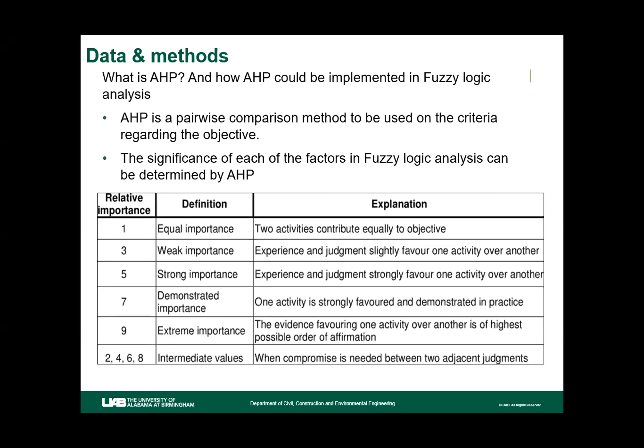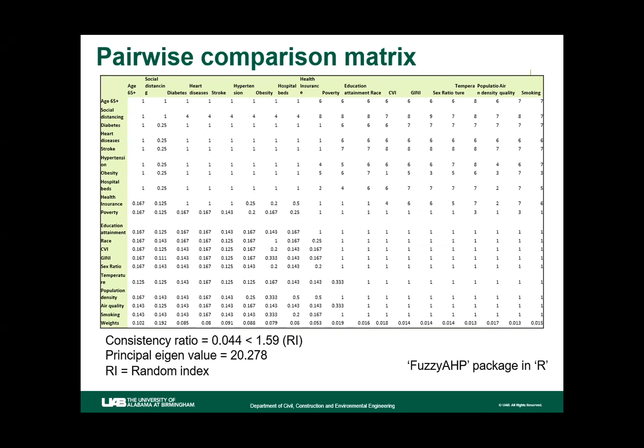Whenever we tried to rank a pair of factors, we used nine choices. Given the number of factors we considered, we produced a pairwise comparison matrix. We calculated a consistency ratio of 0.044, which was less than the random index of 1.59 for our number of factors. This result is actually quite good because our consistency ratio was well below the random index threshold.